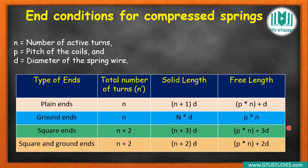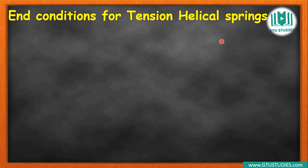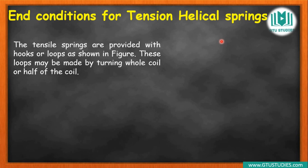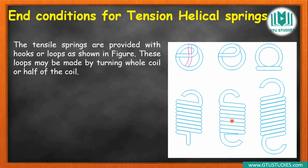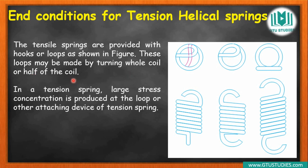When a tension load is applied, we deal with a tension spring. In that case, at the upper and lower ends, hooks or loops are formed. As shown in the figure, a hook structure is made in a curved shape. These hooks or loops can be made by turning a full coil or half of a coil — either full loops or half loops are formed.